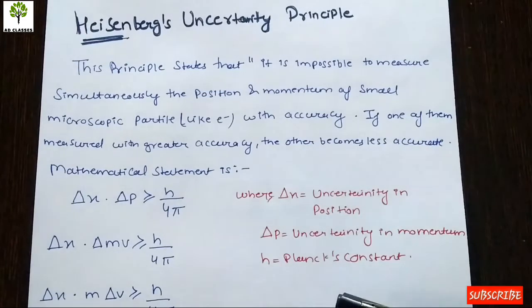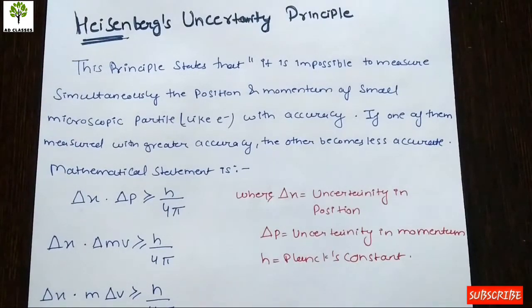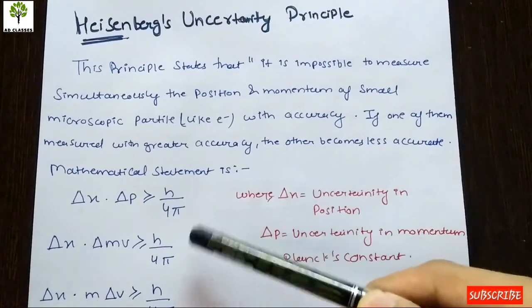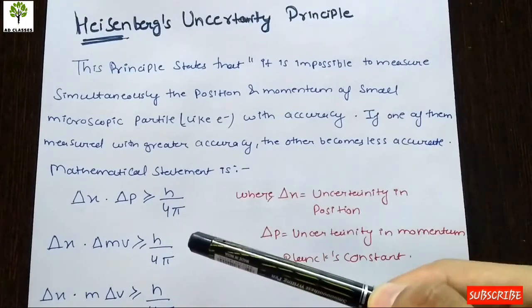The value of h is 6.626 × 10 to the power minus 34. And pi is also known as 22 upon 7.